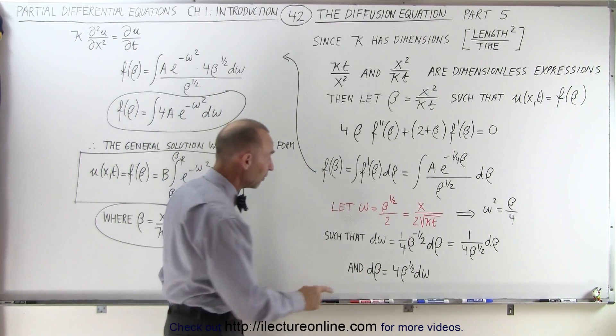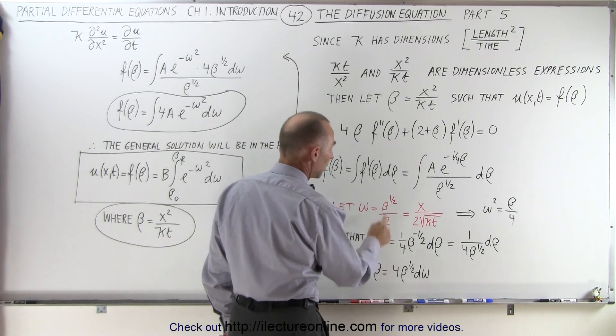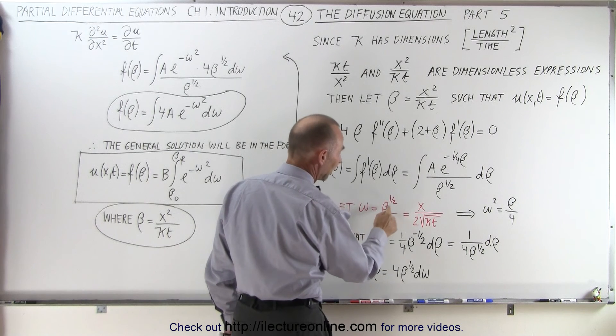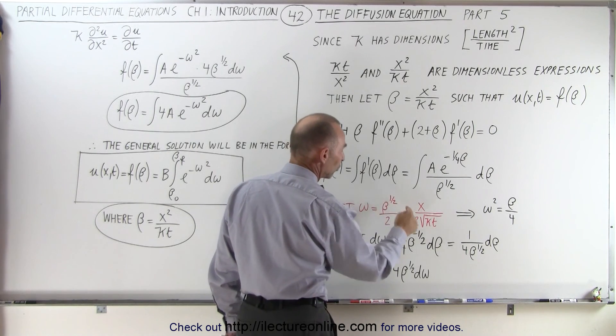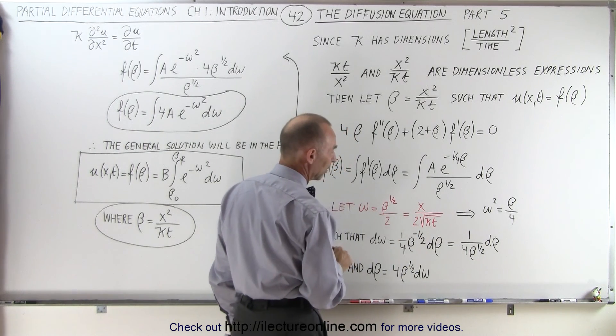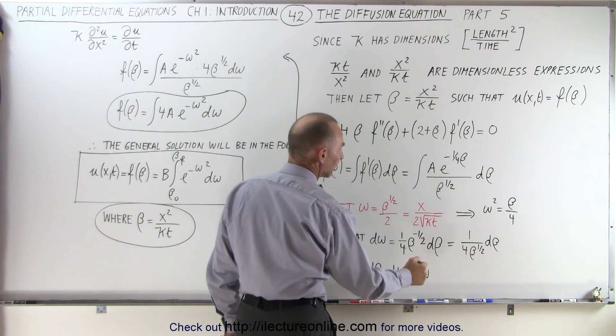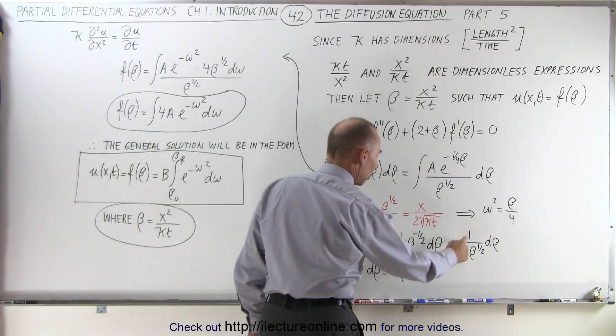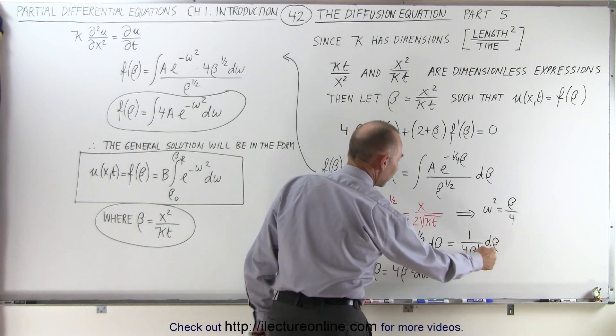If we take the derivative of omega, d-omega, that would be one quarter, because it's one half times one half, times beta to the one half minus one, which is beta to the minus one half, and of course times d-beta. So that means that this is equal to one over four beta to the one half d-beta.